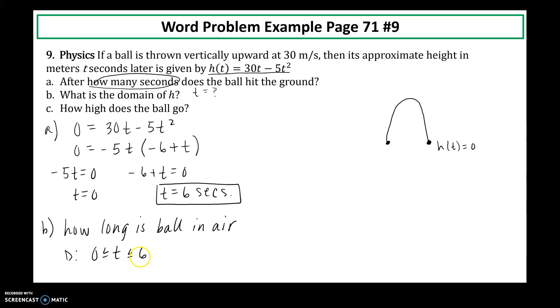So the inequality can include the values. So when I write it in bracket notation, or in interval notation, it has to be these hard brackets. Then in part c, how high does the ball go? What is this really asking me for? What's the maximum of the ball in the air?